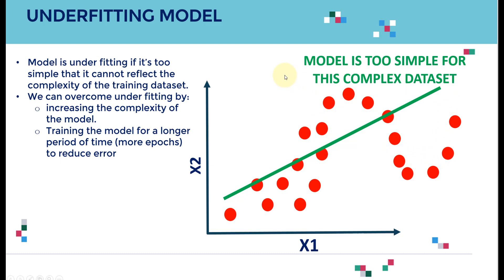This model is basically too simple. It's just a straight line, however my data points are actually nonlinear—they're too complex. This indicates that my model is underfitting the training data because it cannot reflect the complexity of the training dataset.